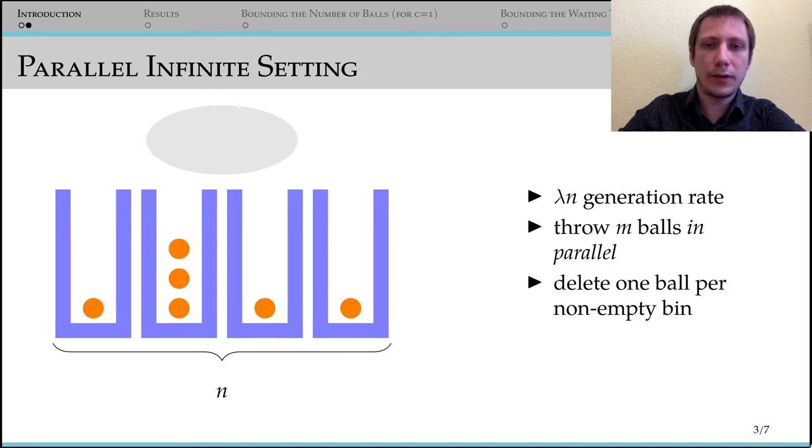In this setting, having two choices per ball loses some of its power. Since lesser loaded bins receive a lot of balls at once, resulting in a bin that is now higher loaded than some originally higher loaded second choices.